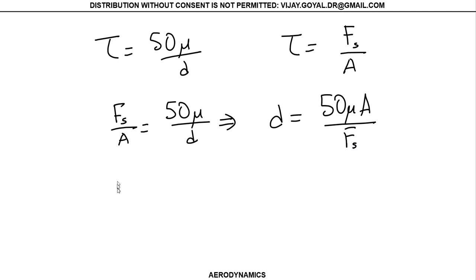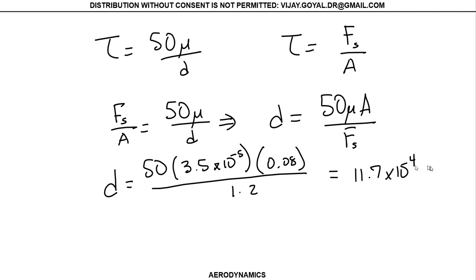Okay, so if I replace all the values that were given in the problem, my μ was equal to 3.5 times 10 to the minus 5, my area was 0.08, my force was 1.2, and this gives me a value of 11.7 times 10 to the minus 4 feet.